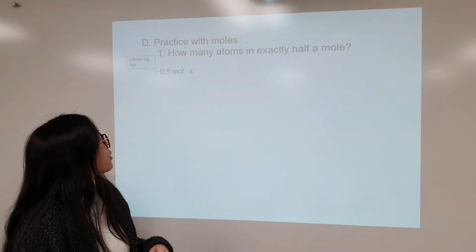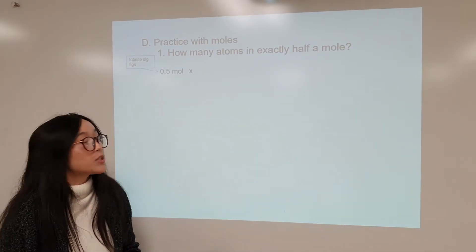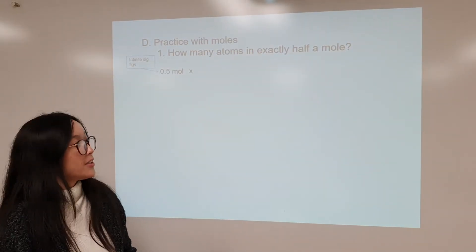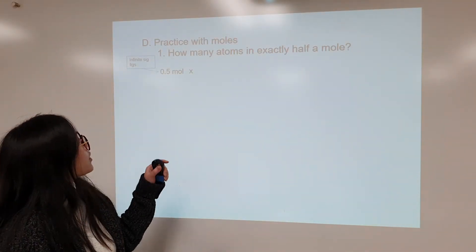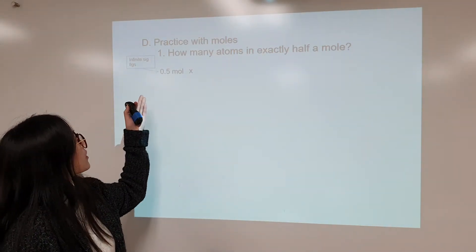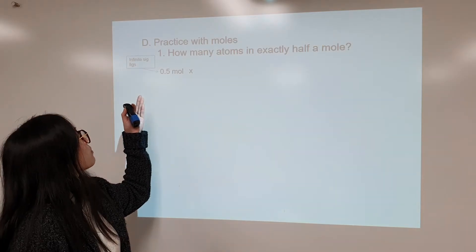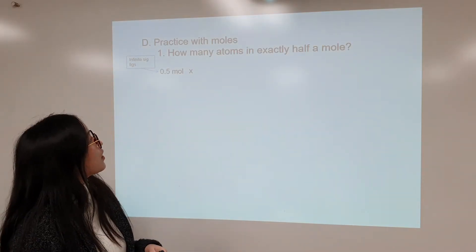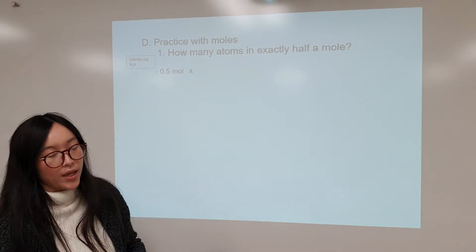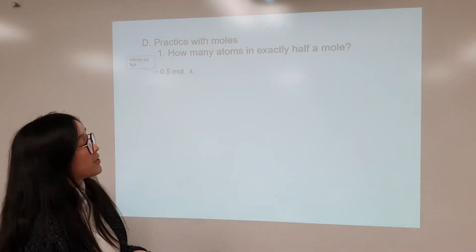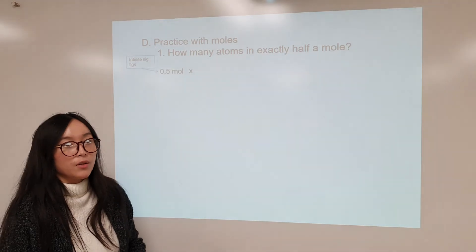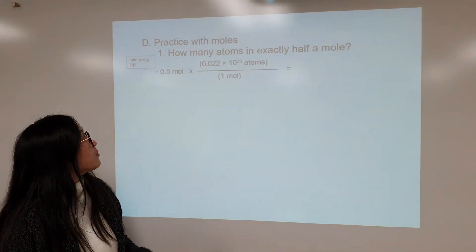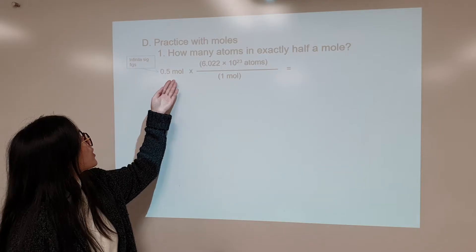And then we have some practice with moles. You want to take out a periodic table for this, definitely. So have your periodic table handy with you. For this one, we'll be going over 0.5 moles to atoms. So we have 0.5 here, which has infinite sig figs. And we want to make sure our conversion with Avogadro's number is set up so that we can cancel out the moles given and get the atoms that we need.